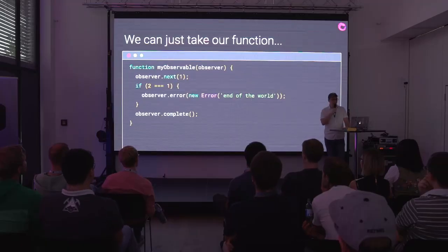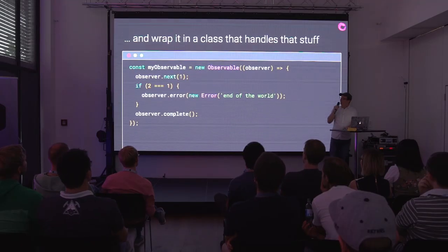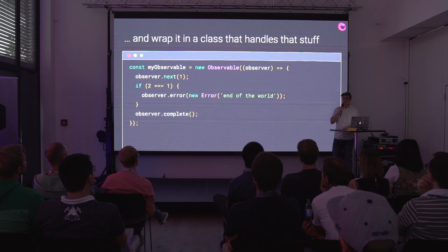What we can do is take our function as it exists — it's just a function that when you call it sets up something that is producing data, funneling things out of this observer object — and we can wrap it in this type called Observable that handles all of those things for us.